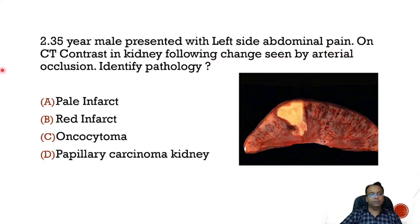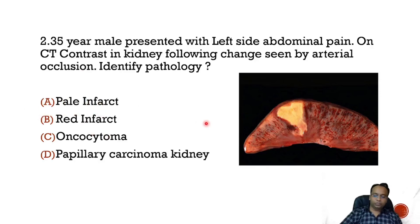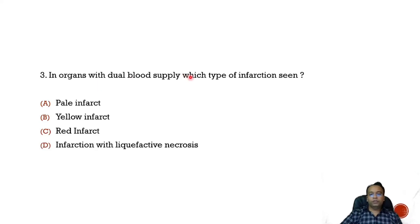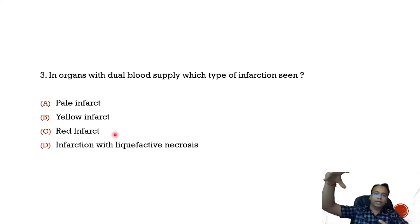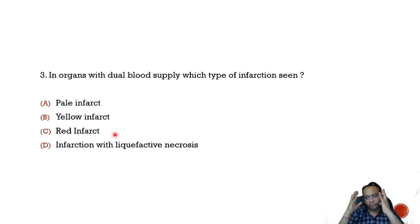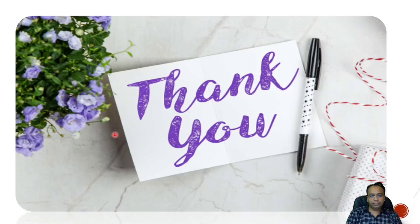MCQ 2: A 35-year-old male presented with left-side abdominal pain; on CT contrast the kidney shows changes seen by arterial occlusion — identify the pathology. There is a triangular wedge-shaped white area in the kidney with pain — this is infarction, and in solid organs pale infarction is seen, so the answer is pale or white infarction. MCQ 3: In an organ with dual blood supply, which type of infarction is seen? Red infarction — because if infarction develops from one blood supply blockage, the collateral supply provides blood to the infarcted area, causing congestion and red infarction.